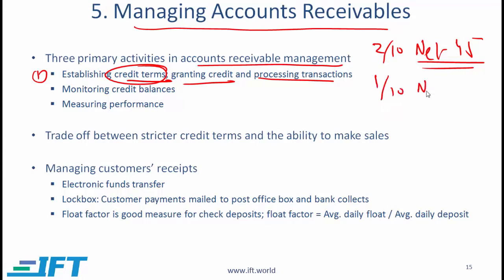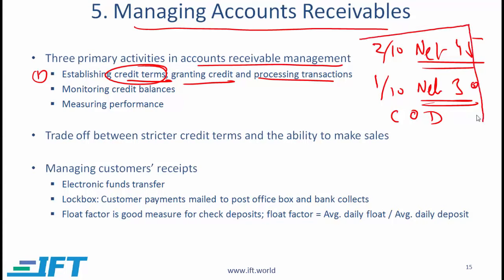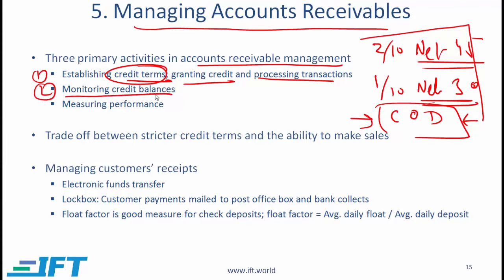What does 1/10, net 30 mean? This means that if a customer pays within 10 days, they will get a 1% discount, but the customer is supposed to pay the entire amount within 30 days. You can also have payment terms such as cash on delivery or cash before delivery. A company needs to establish which customer has which credit terms. Customers with a good credit record can get more relaxed credit terms, whereas a customer who does not have good credit would have to pay cash on delivery or receive very tight credit terms.